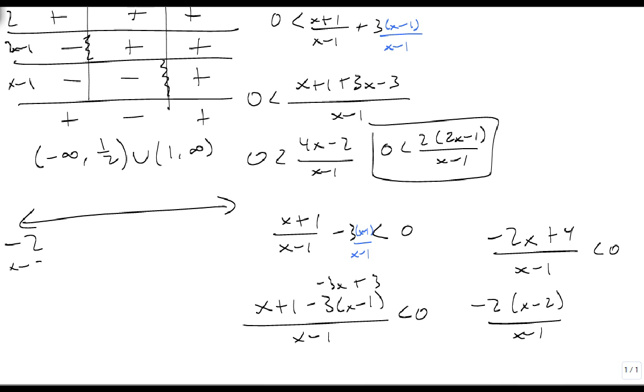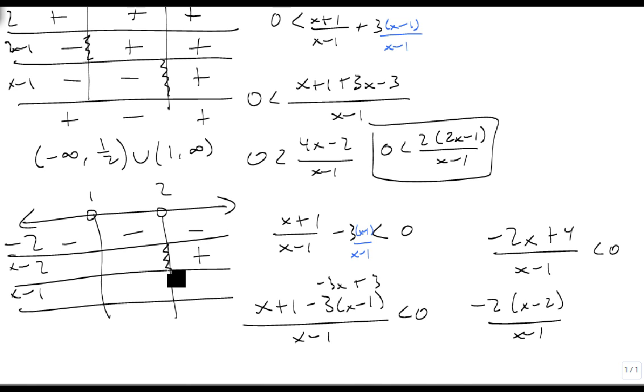So we get a -2, an x - 2, an x - 1, with an open circle at 1 and an open circle at 2. The -2 is always negative. x - 2 is positive when it's bigger than 2, and negative otherwise. x - 1 is positive at 1 and less than to the left. So that gives me a negative, a positive, and a negative. I want to know when it's less than 0, so that's my negative, so it's true here and here.